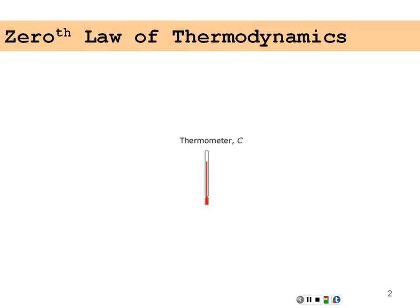We're going to start with the zeroth law of thermodynamics. The first two laws of thermodynamics had been pretty much established — conservation of energy, the law of entropy, the idea of disorder increasing as a function of time. So once those had already been established, it was determined that they really needed a law before that,